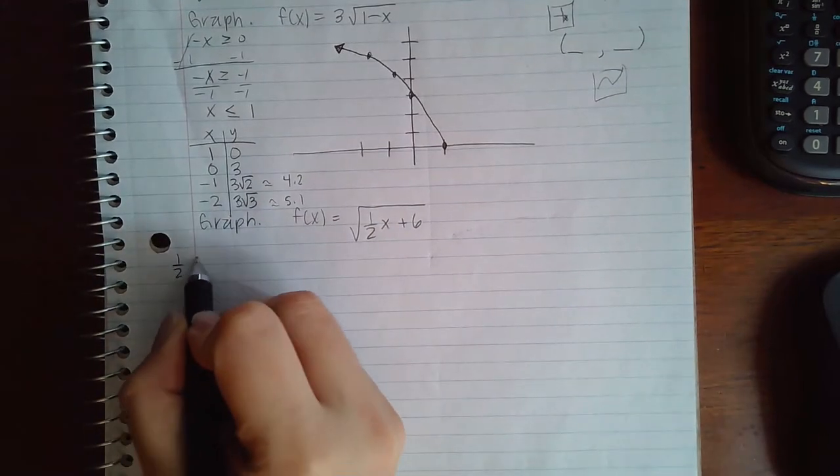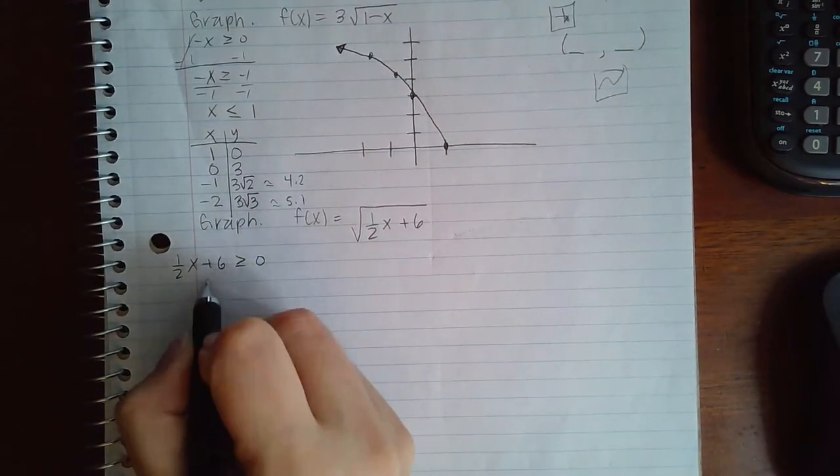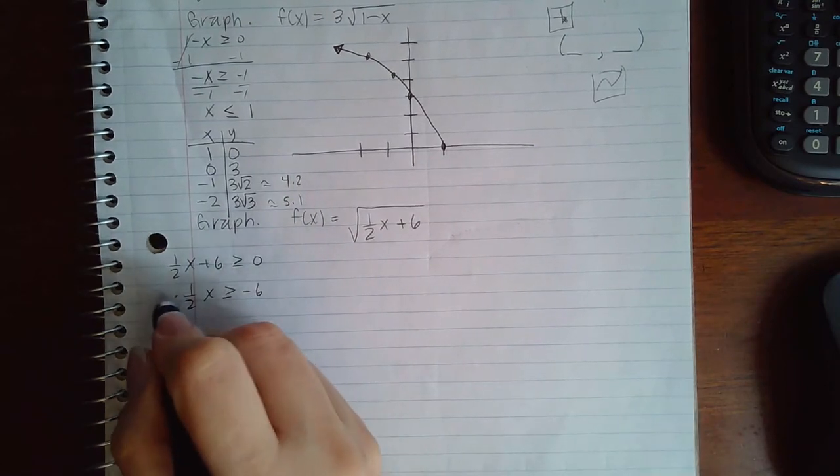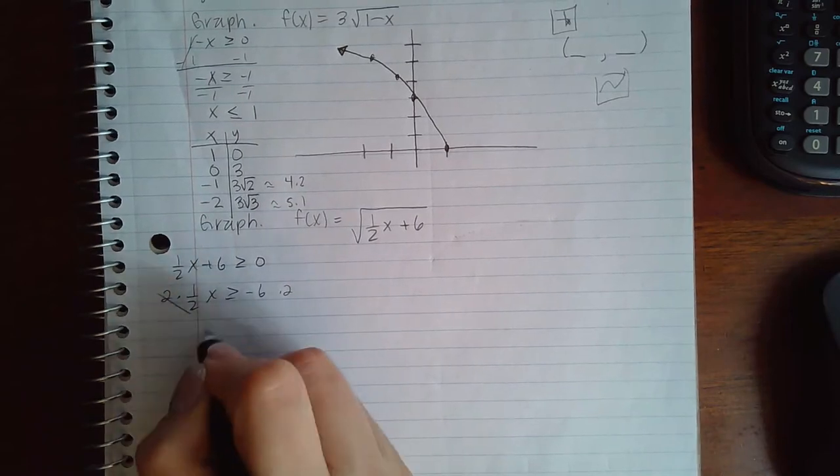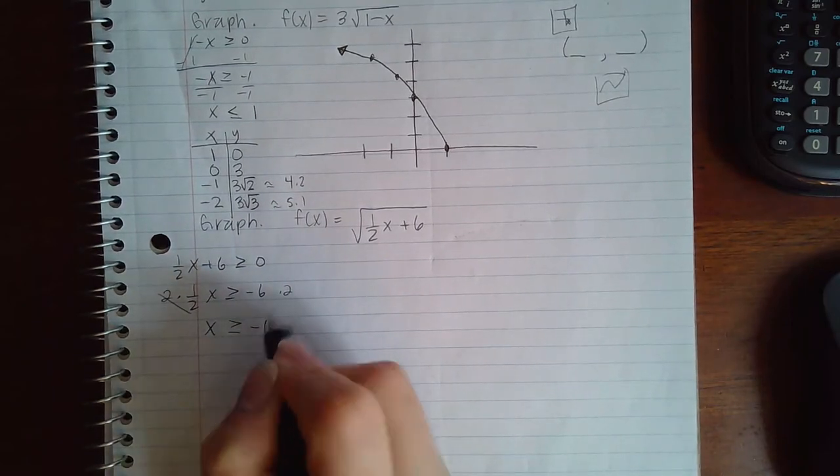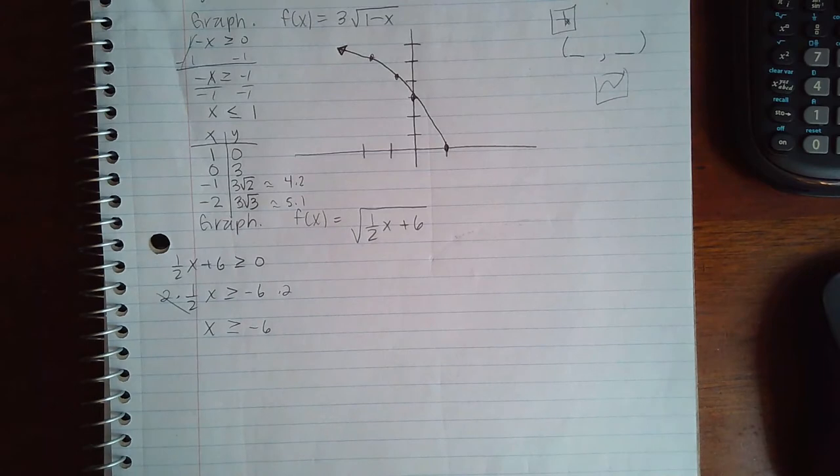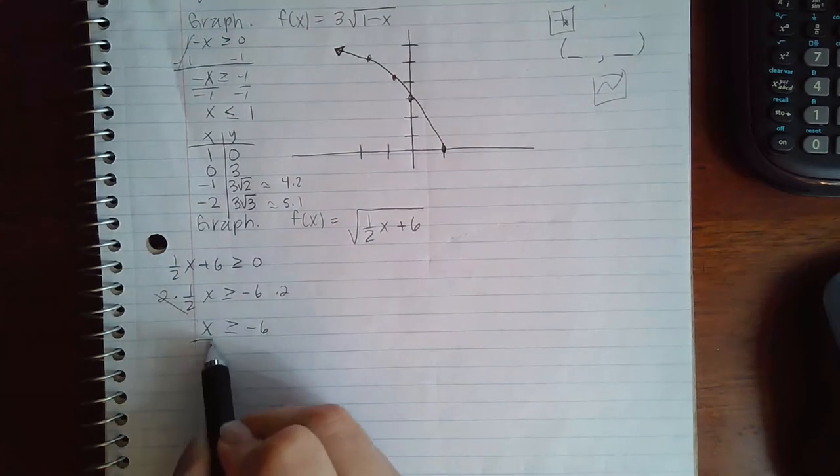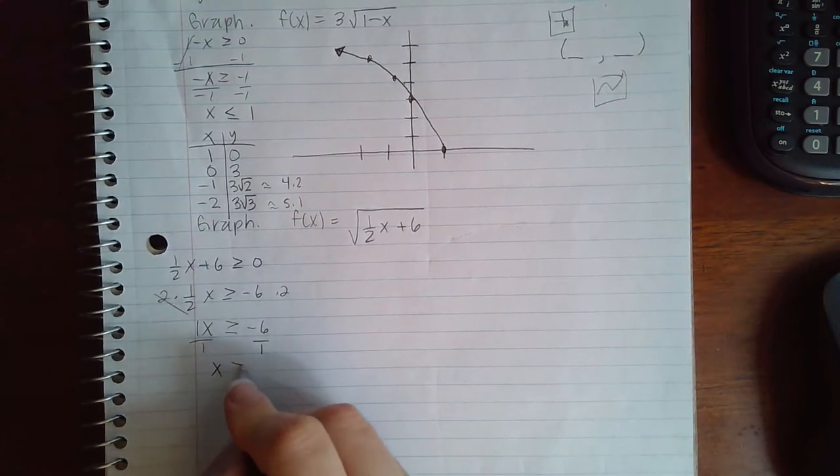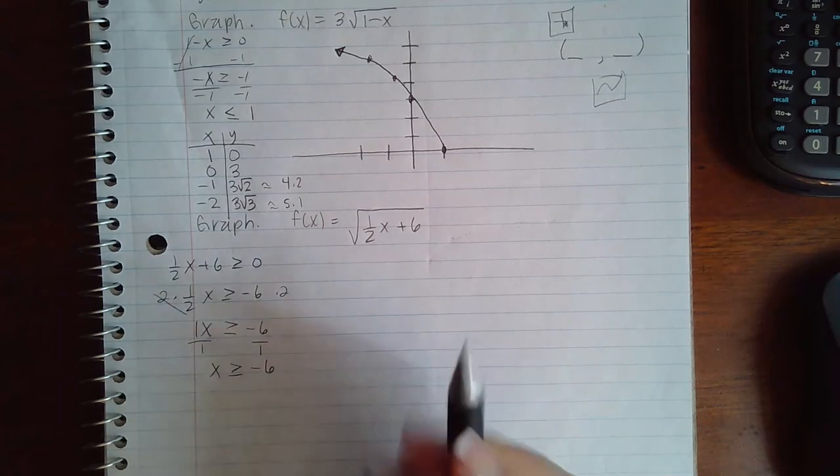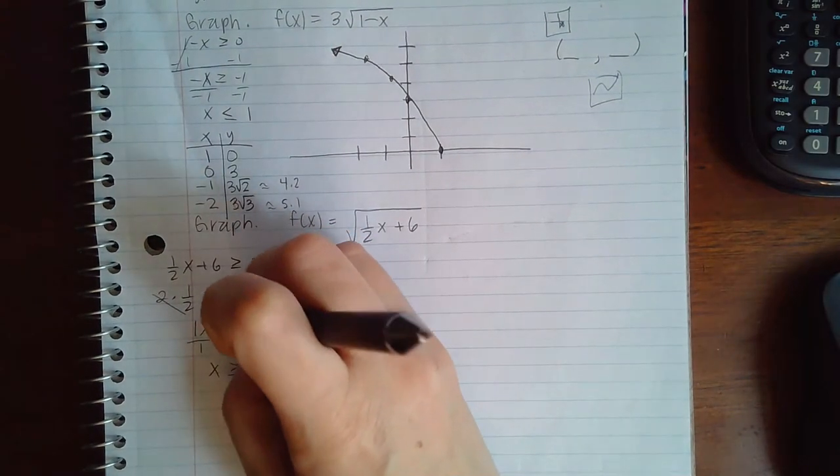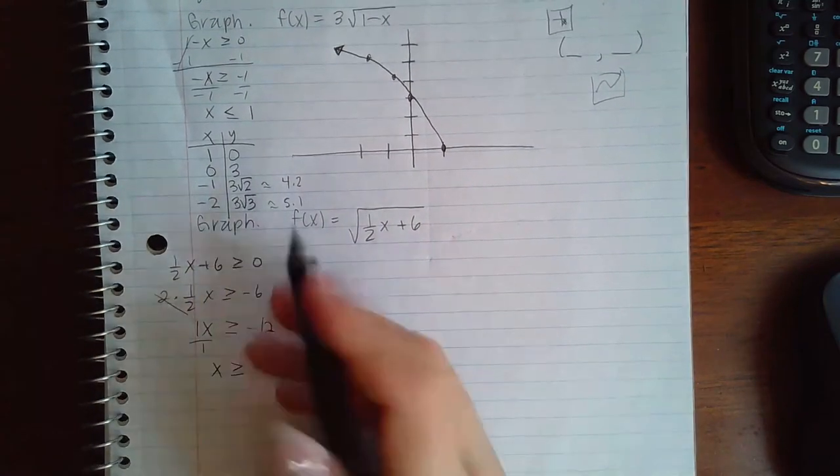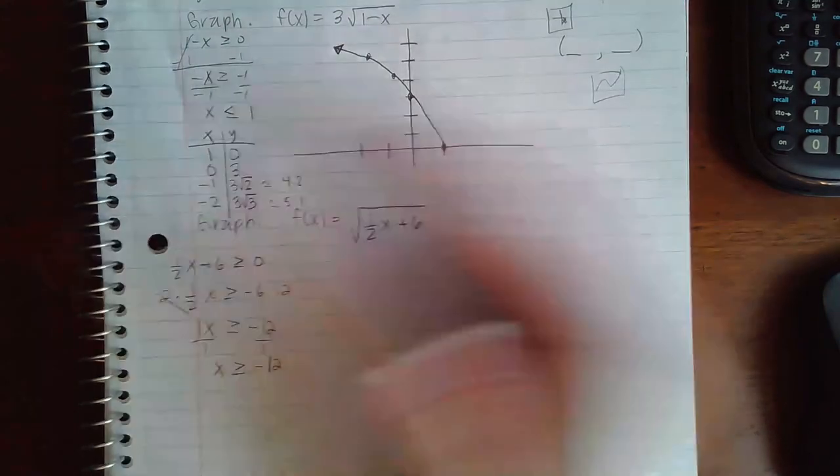Okay, so last one. I'm going to take that radicand and set it greater than or equal to 0. I'm going to minus 6 on both sides. I'm going to actually multiply by 2 on both sides to get rid of the fraction, but I did multiply by a positive 2, so the symbol is not going to flip over. And if I am left with the 1, even if I were to divide by 1, the symbol would still not flip over. Oh, negative 6 times 2 is not 6, it's 12.